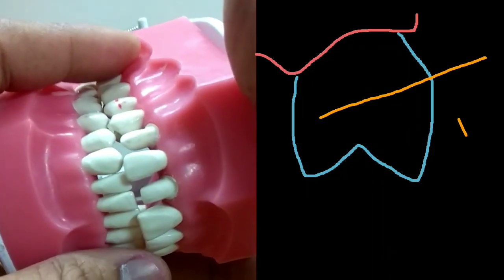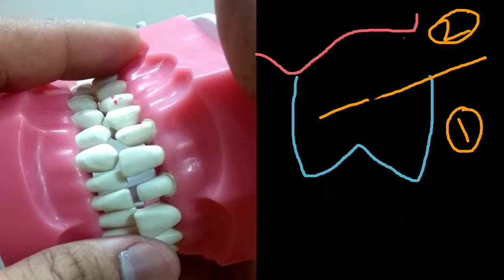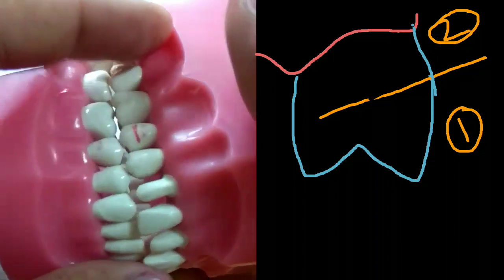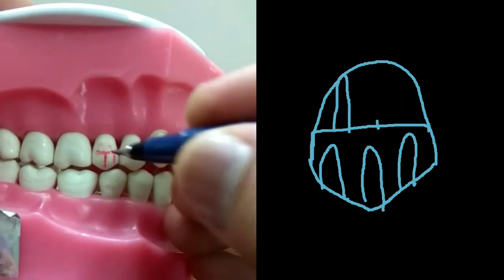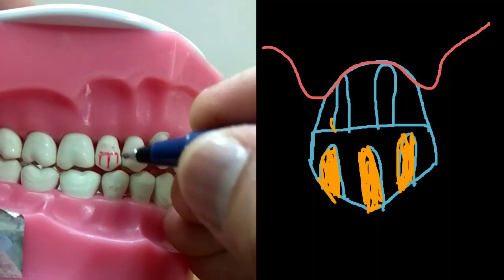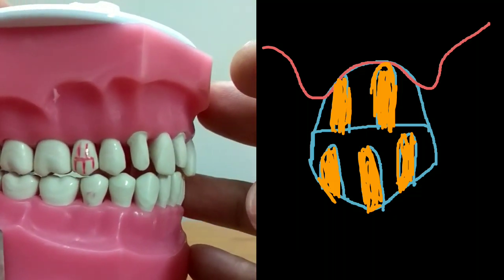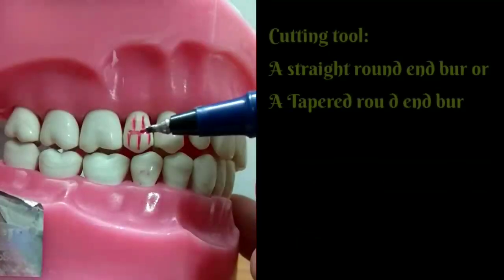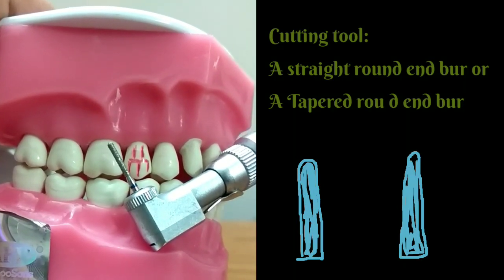Similar to any other maxillary or mandibular premolar, the labial surfaces are in a curved plane, which can be classified into gingival half and incisal half. We will have depth orientation grooves accordingly — three grooves for the incisal half and two grooves for the cervical half, same as for a canine, central incisor, or any other anterior teeth.